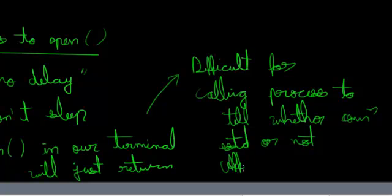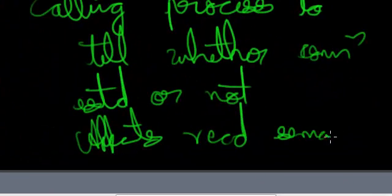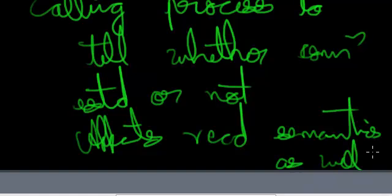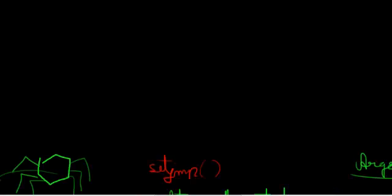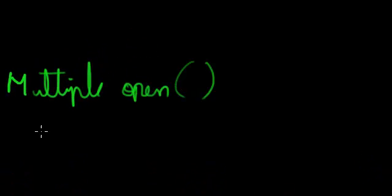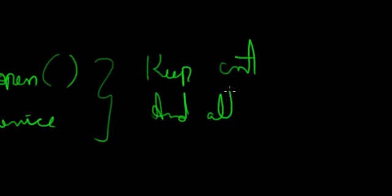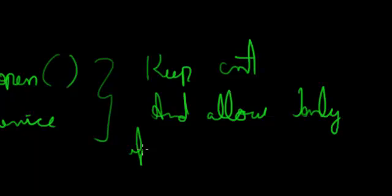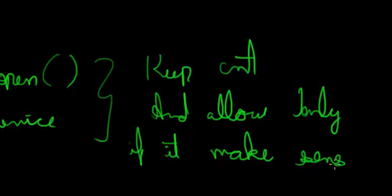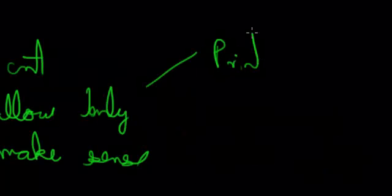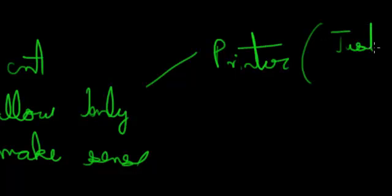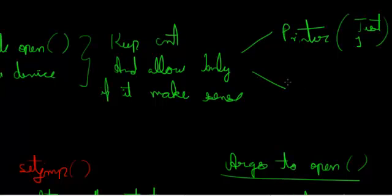This also affects the read semantics. If a device is opened multiple times, it depends on the semantics — you keep a count and allow multiple opens only if it makes sense. For example, if you are talking about a printer, it would not really make sense to have more than one open at a time. But if you are talking about a console, it does make sense because this allows users to communicate with each other.